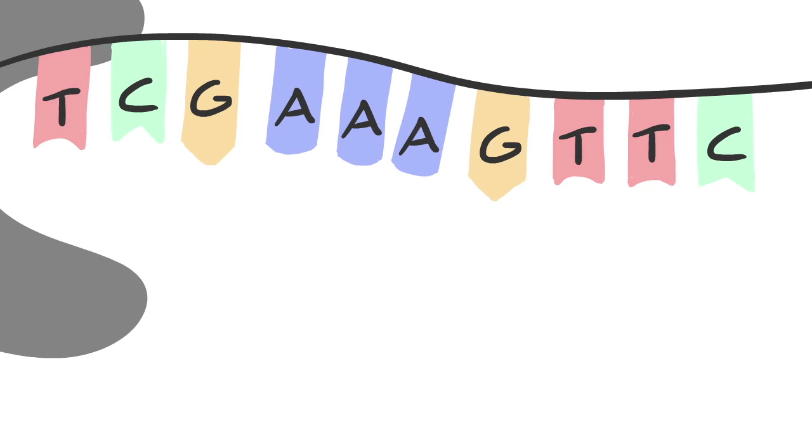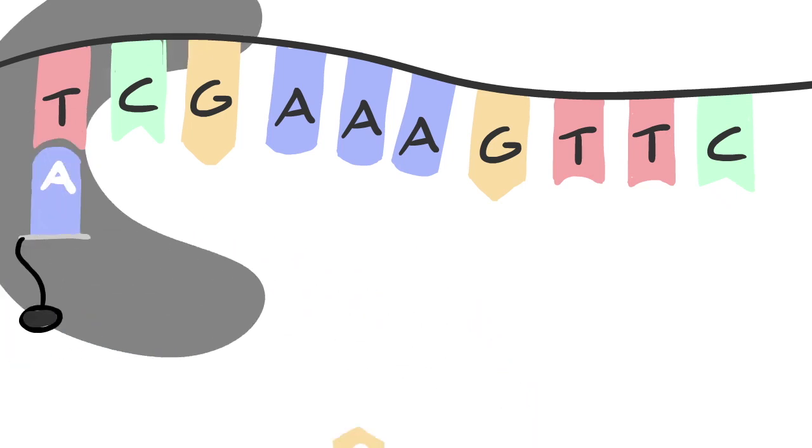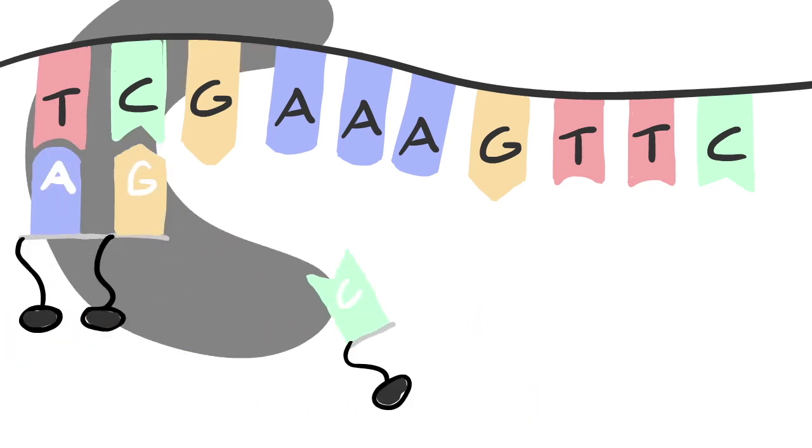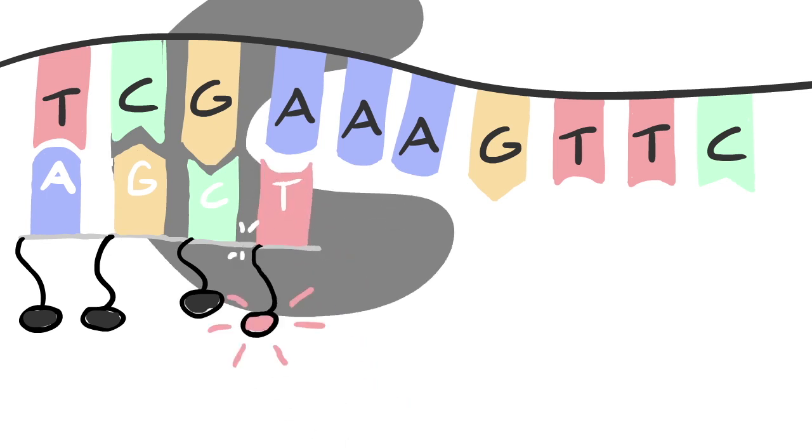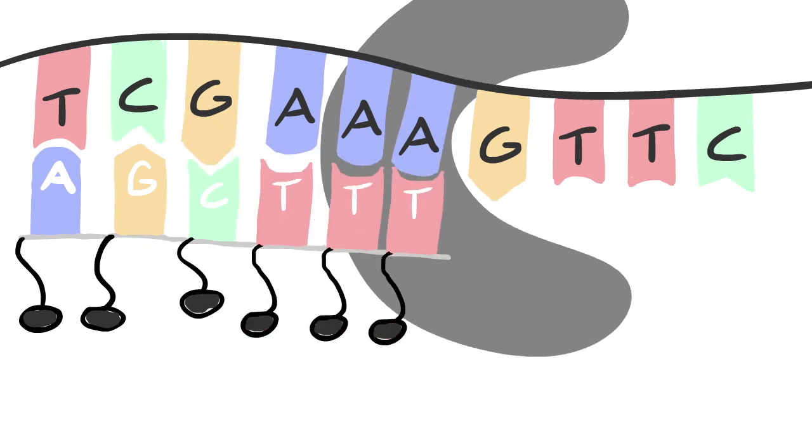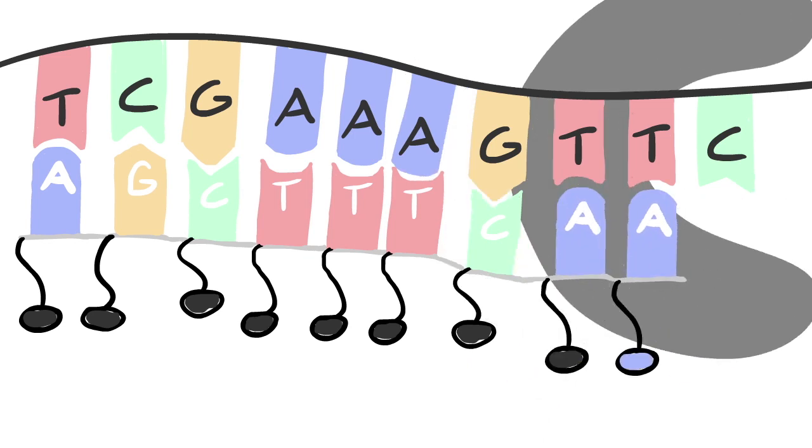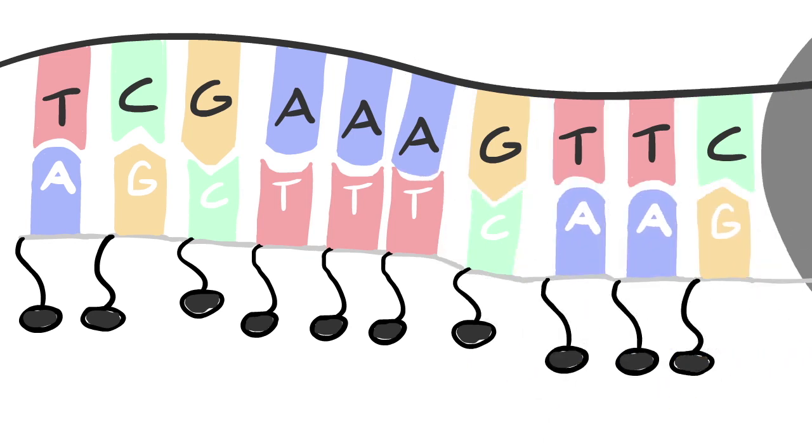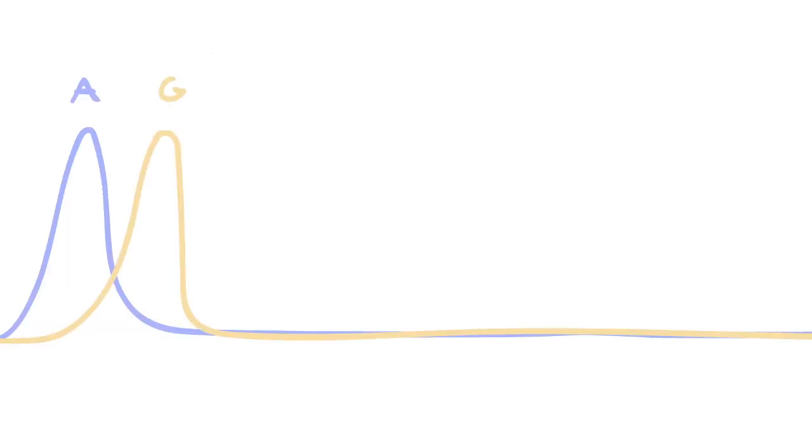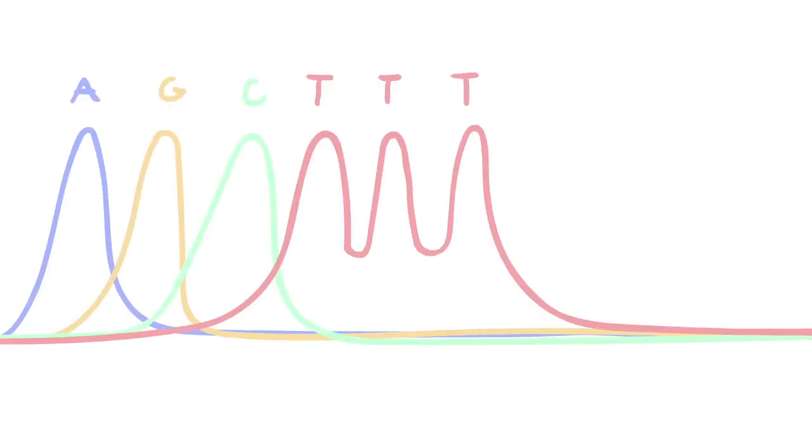During a sequencing run, 100 to 300 base pair long sequences of barcoded DNA fragments are generated. These sequences are called reads. Sequencing takes place by synthesis of complementary DNA strands in which an enzyme polymerase synthesizes a strand with fluorescently labeled nucleotides. Each nucleotide is labeled with a specific color that is recorded by a camera. A sequence of detected colors is then translated to a nucleotide sequence.